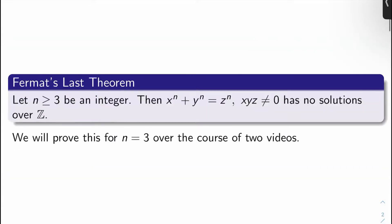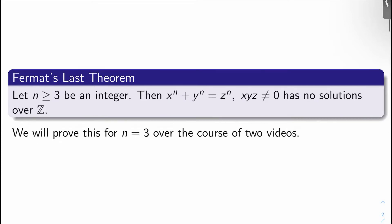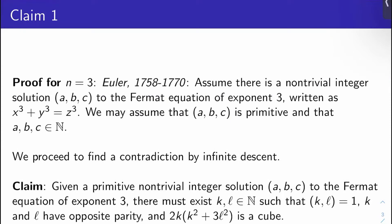So here's the theorem. Recall from last video: Fermat's Last Theorem states that for n at least 3 an integer, x to the n plus y to the n equals z to the n, where x, y, z is non-zero, has no solutions over the integers. We're going to prove this for n equals 3 starting today. We're going to break the proof into a series of claims, mostly going through Euler's proof, but there's a gap in Euler's proof, and we'll discuss that gap today and fill it in next video.